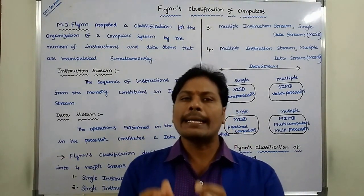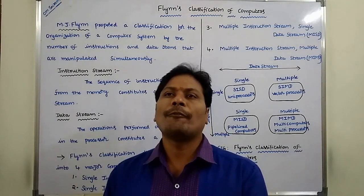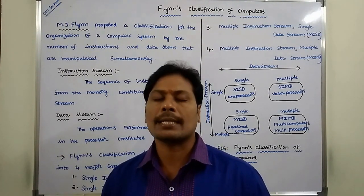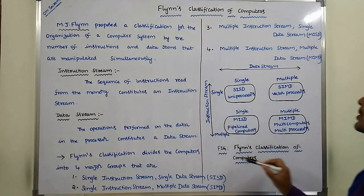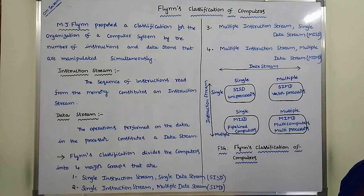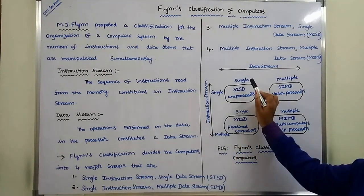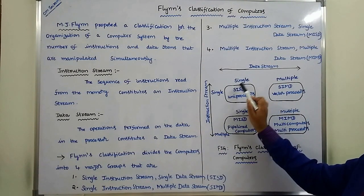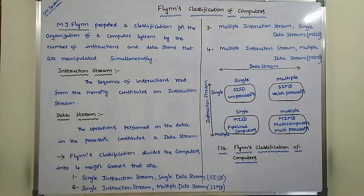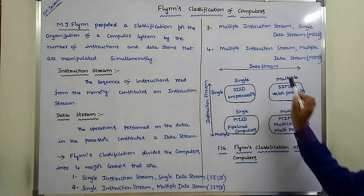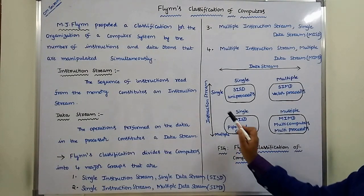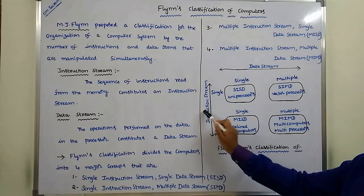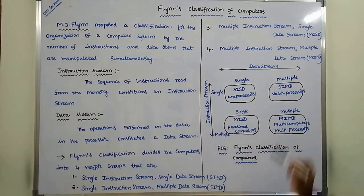Based on the instruction stream and data stream, Flynn classifies the computer into four categories: SISD, SIMD, MISD, and MIMD. This diagram shows the four major categories of Flynn's classification. Single instruction stream and single data stream is SISD. Single instruction stream and multiple data stream is SIMD. Multiple instruction stream and single data stream is MISD. Multiple instruction stream and multiple data stream is MIMD.